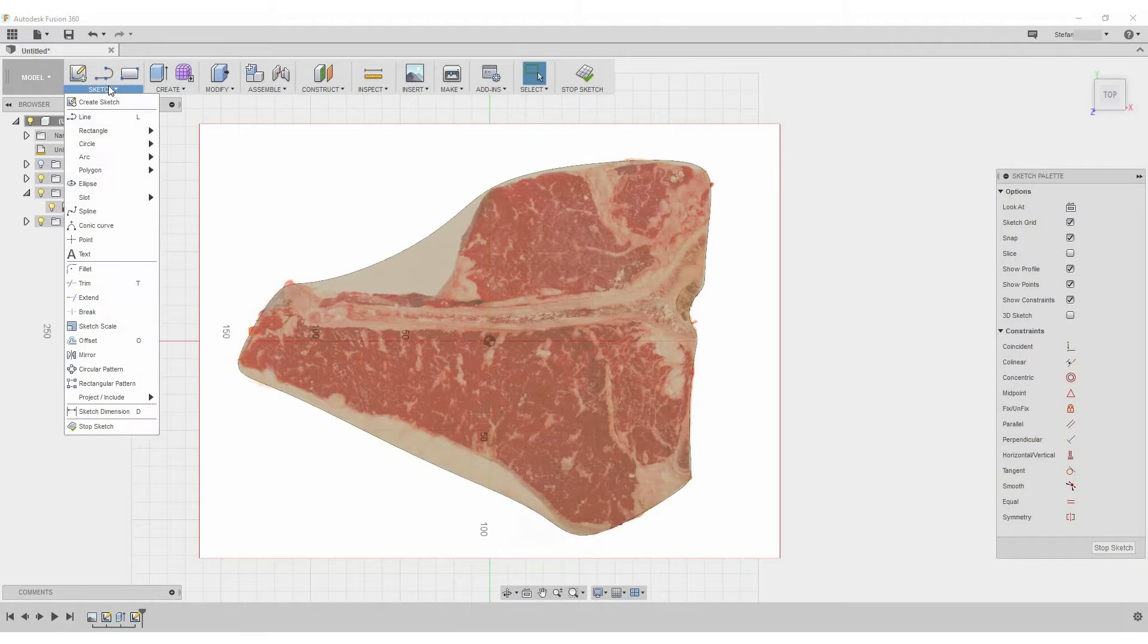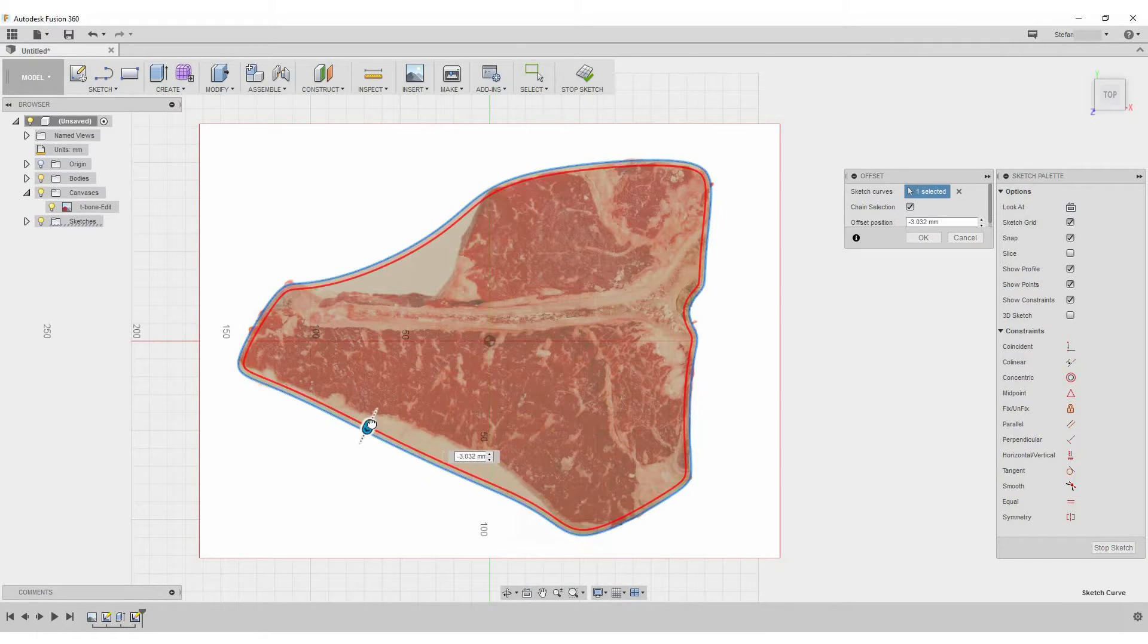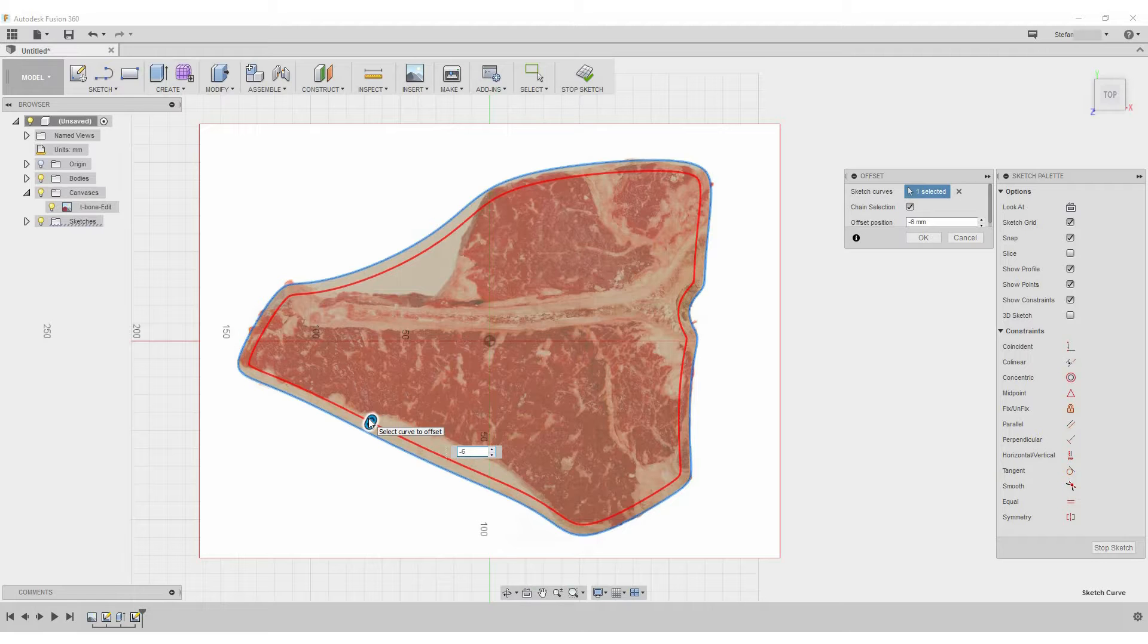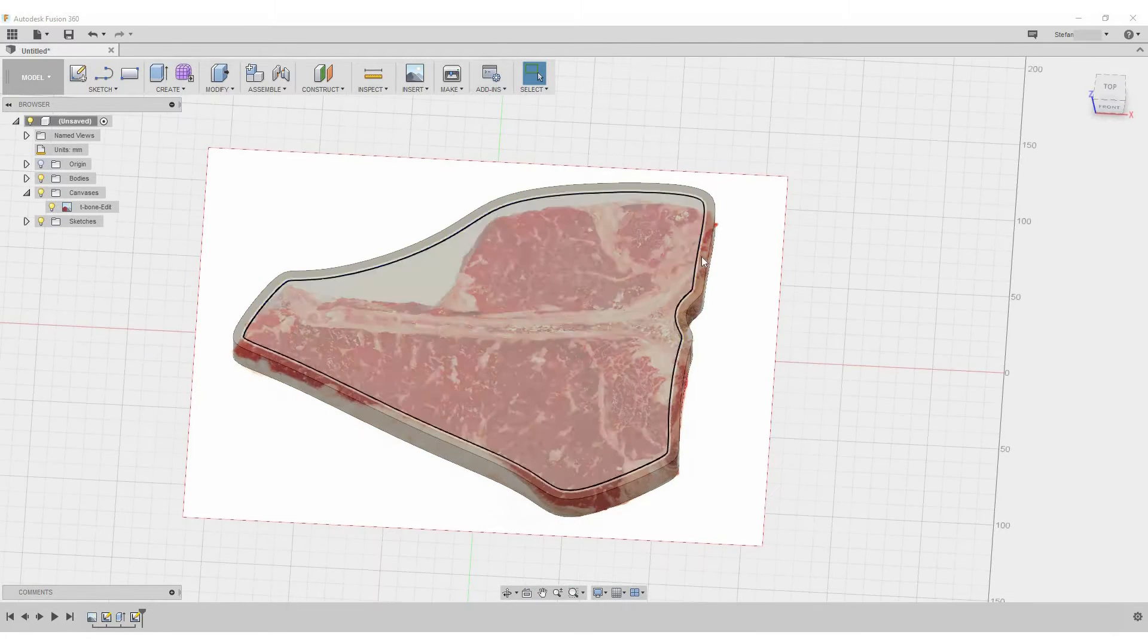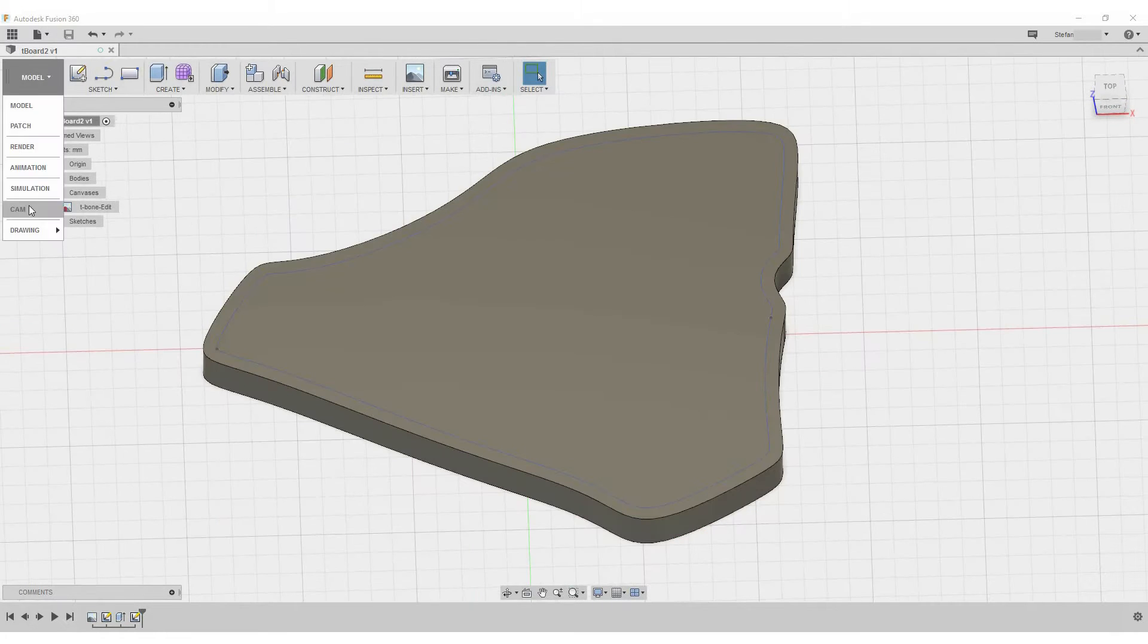I created an additional sketch where I used the offset function to create a line at the location where later a groove all around the circumference shall be routed. Now let's switch to the CAM module.